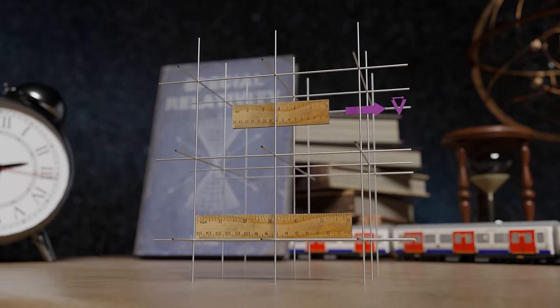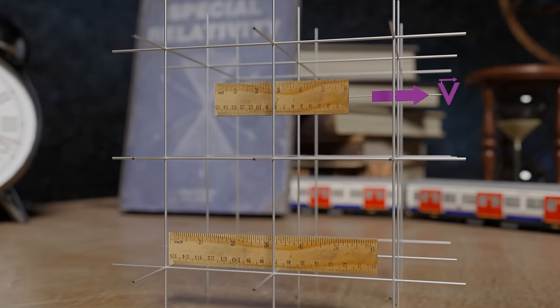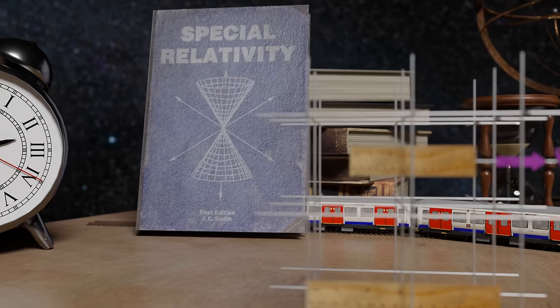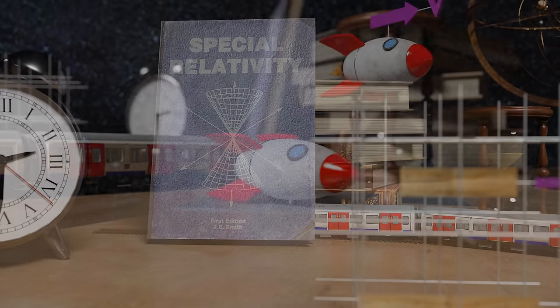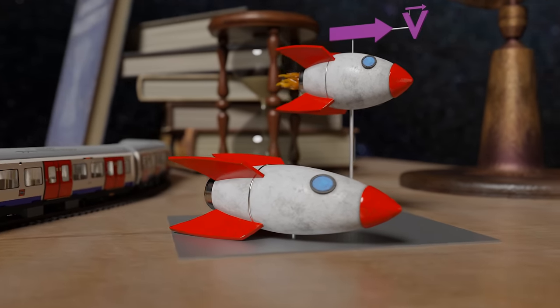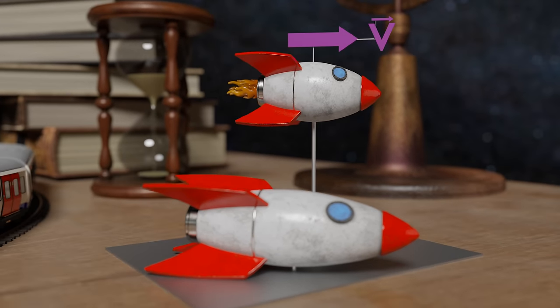The phenomenon of length contraction is an indispensable element of the theory of relativity. But is the contraction of physical objects even real? And if so, what actually causes it?